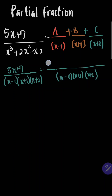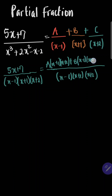Solving this: x minus 1 cancels out from this term, leaving x plus 1 and x plus 2. Here we have A multiplying x plus 1 and x plus 2, plus B. Then x plus 1 cancels out, so you have x minus 1 and x plus 2 for B's term, plus C where x plus 2 cancels, leaving x minus 1 and x plus 1.